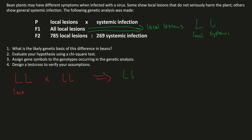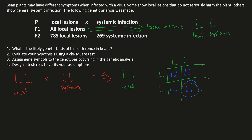The big L, little l plants would be local lesions, and the little l, little l would be systemic. For a heterozygote with this genotype, the dominant phenotype occurs and we get all local lesions in F1. When we cross the F1 with themselves, we get a mix in F2: big L big L, big L little l (heterozygote), and little l little l — and only little l little l will be systemic infection. So we have a 1 to 3 ratio of systemic to local lesions, and 785 to 269 is very similar to a 3 to 1 ratio. We're going to assume a 3 to 1 ratio of dominant to recessive phenotypes.